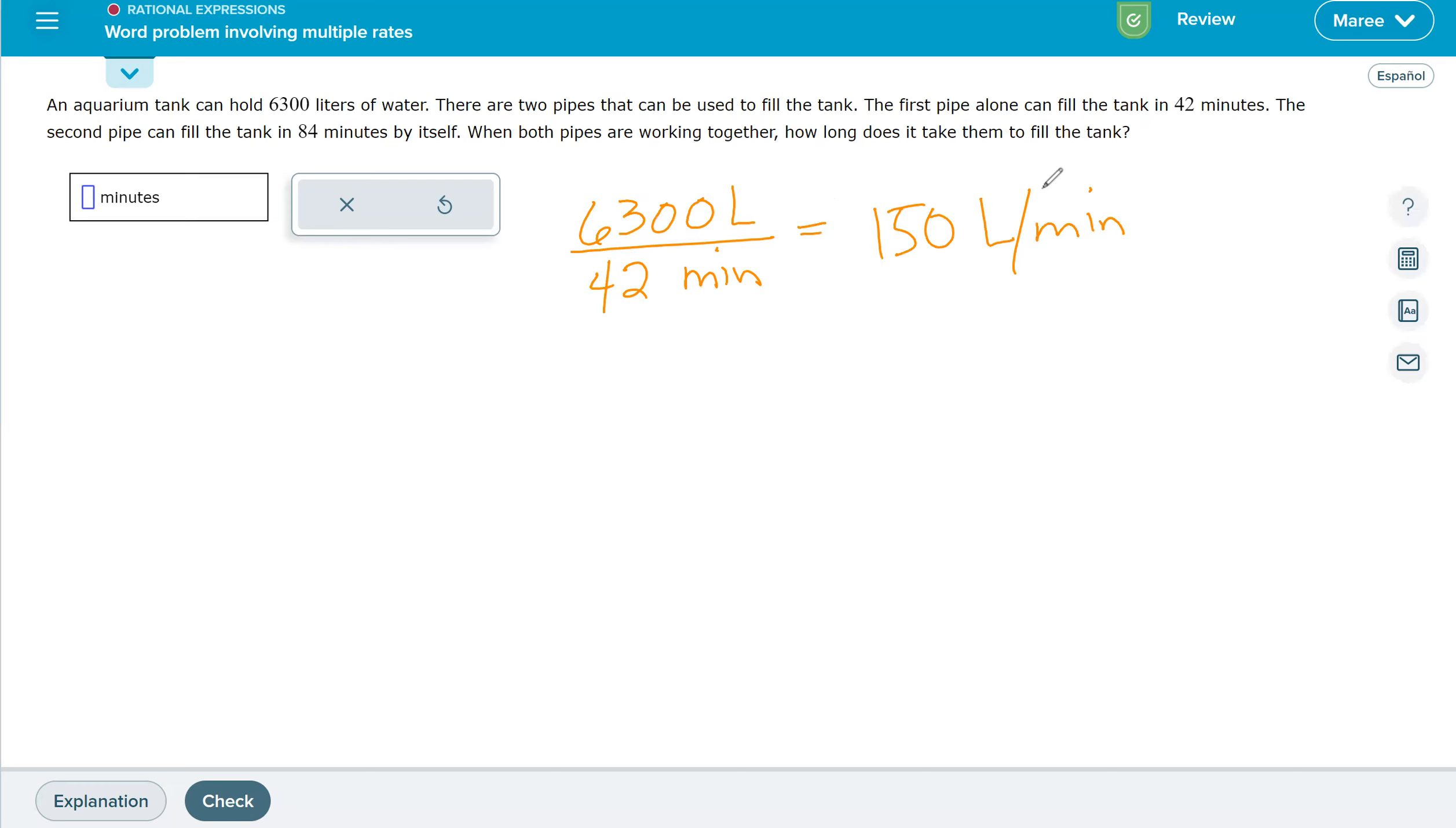The second pipe can fill the tank in 84 minutes by itself. So 6,300 liters divided by 84 minutes would be 75 liters per minute.